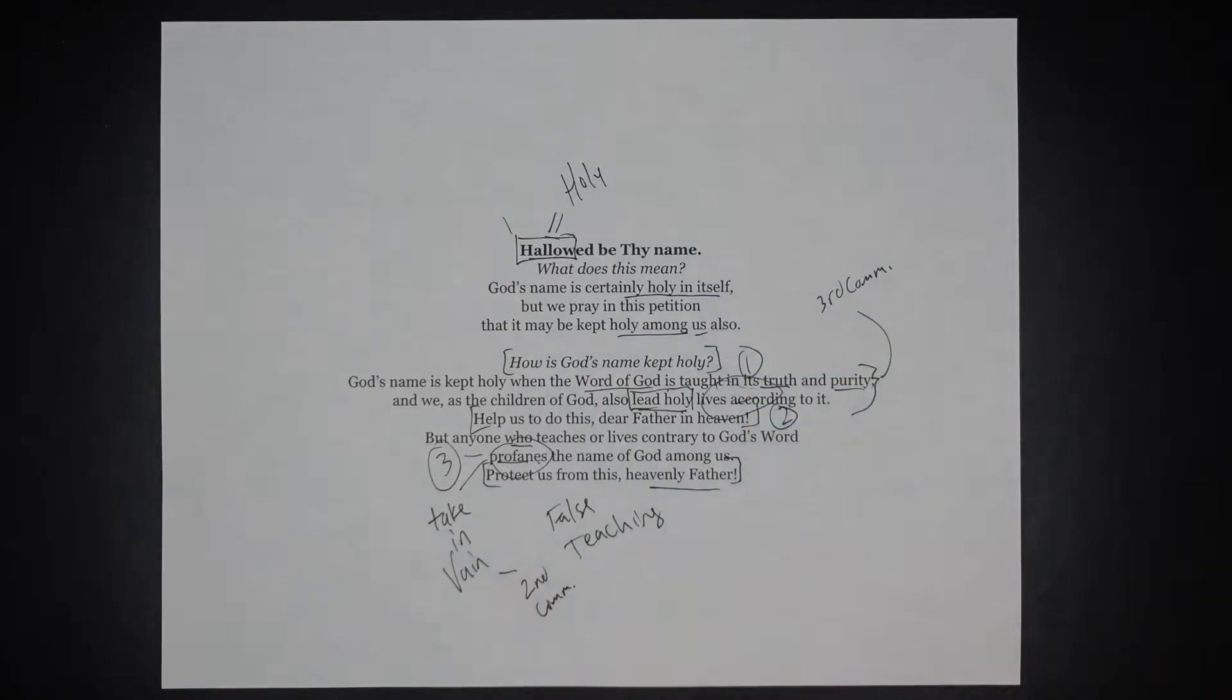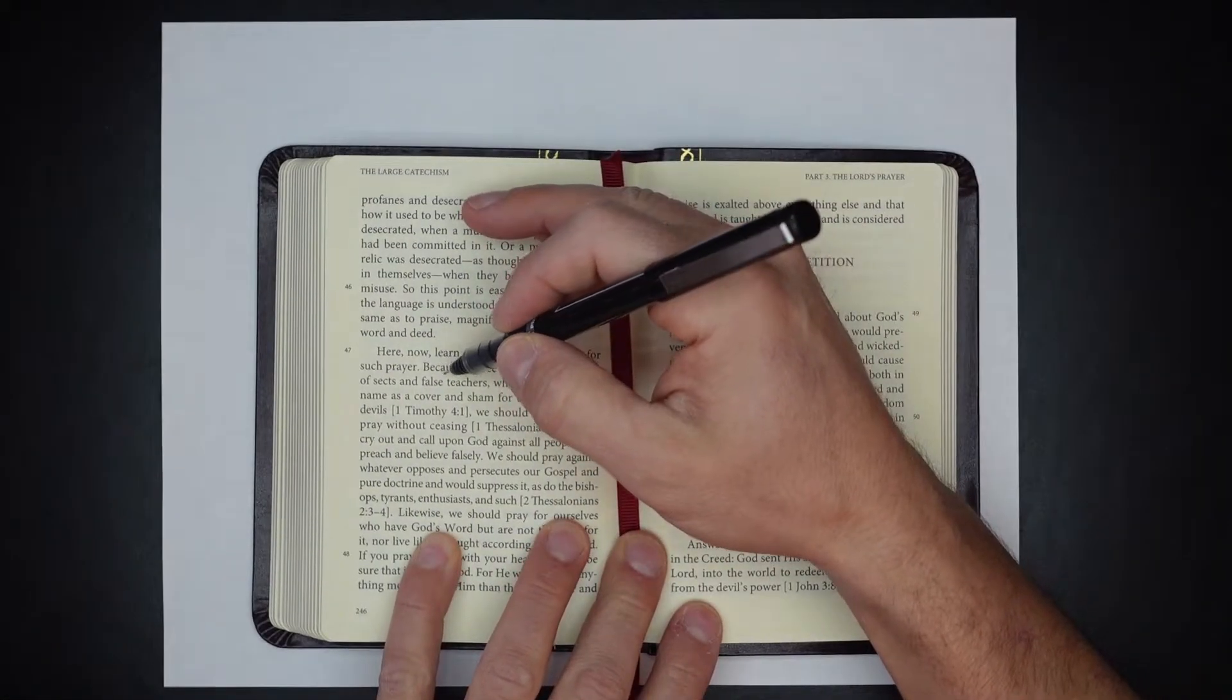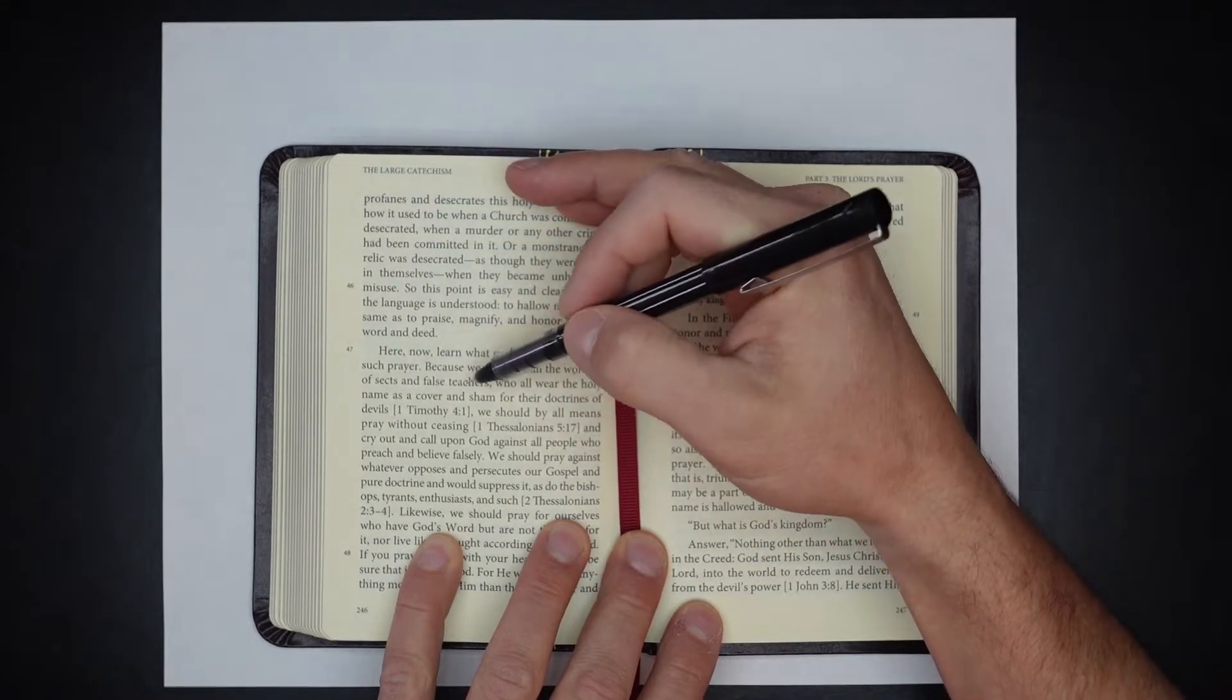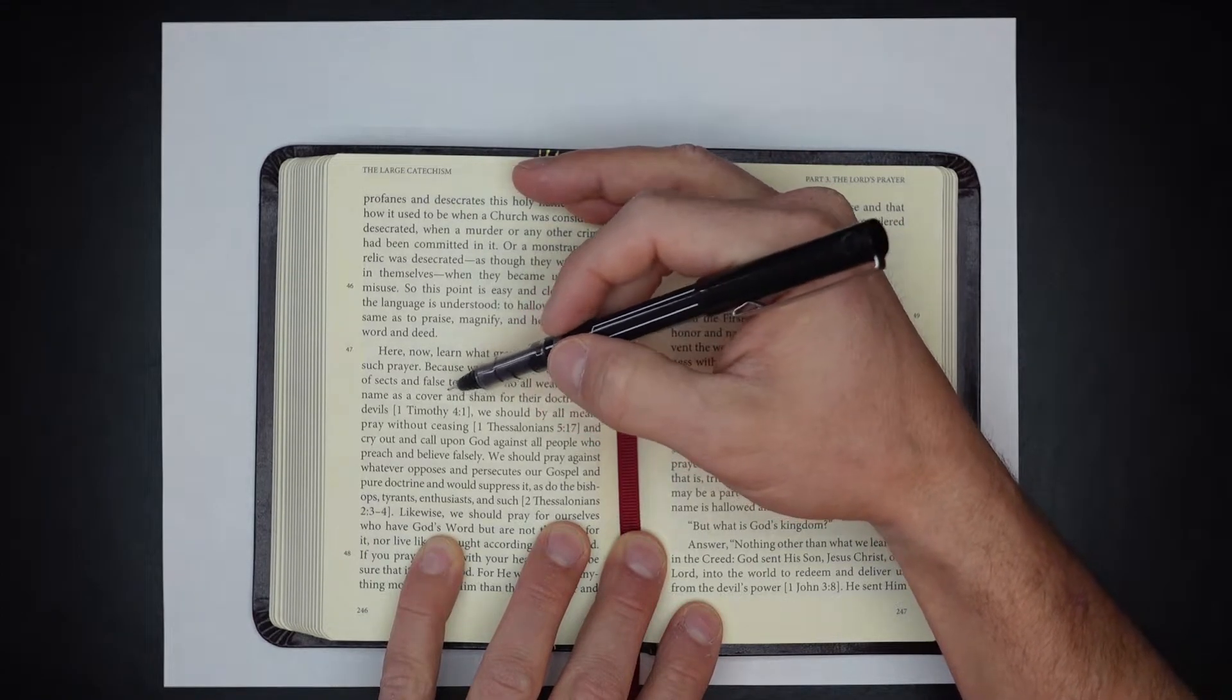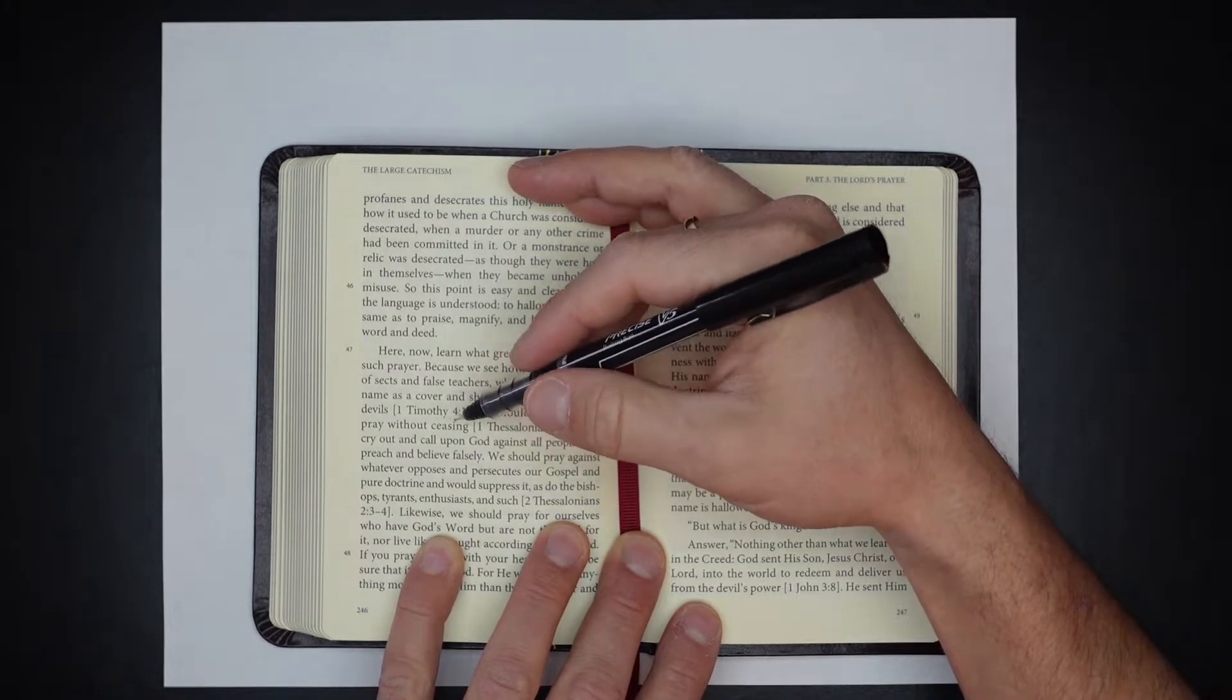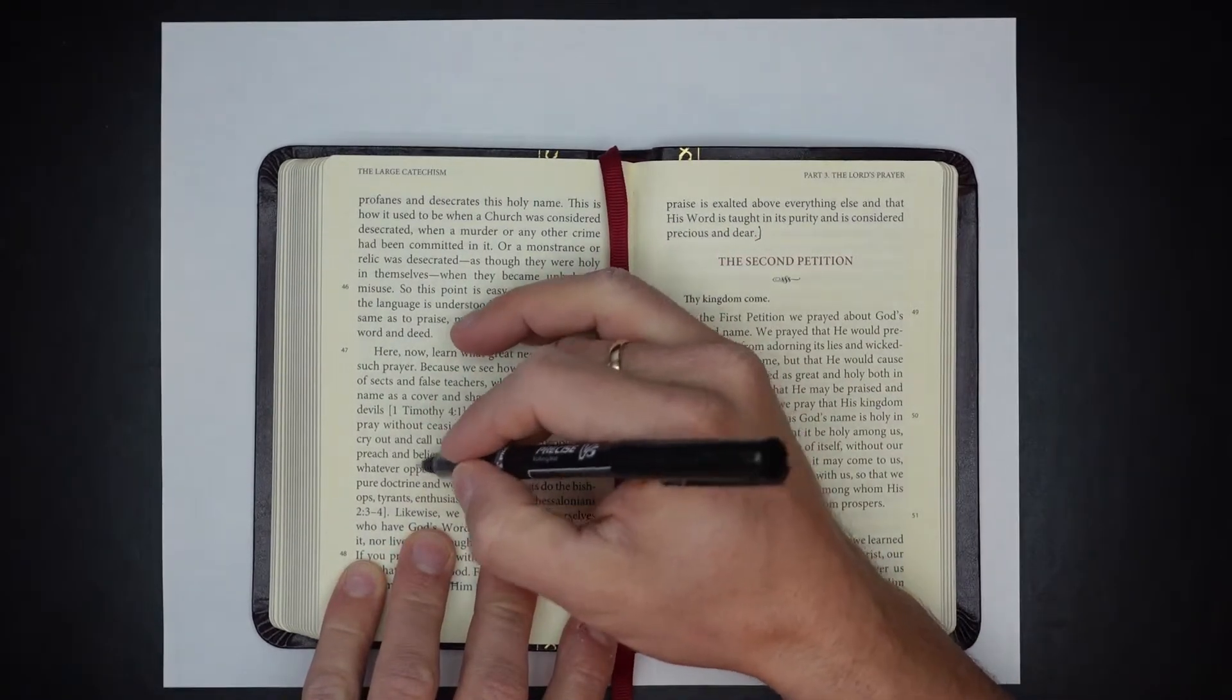Luther concludes this petition in the small catechism by saying this: Here now learn what great need there is for such prayer, because we see how full the world is of sects and false teachers, who all wear the holy name as a cover and a sham for their doctrines of devils. We should by all means pray without ceasing and cry out and call upon God against all people who preach and believe falsely.